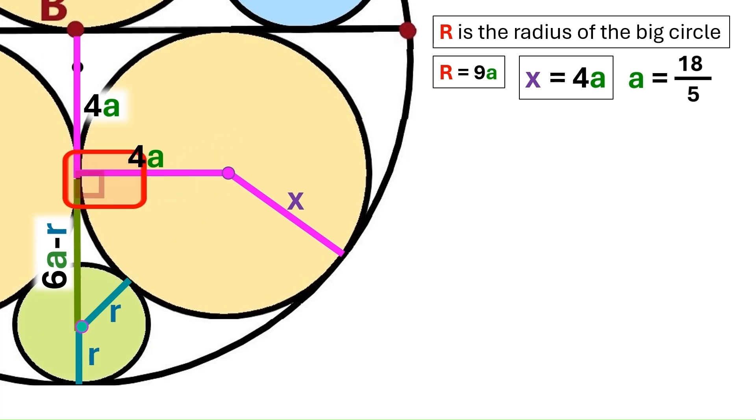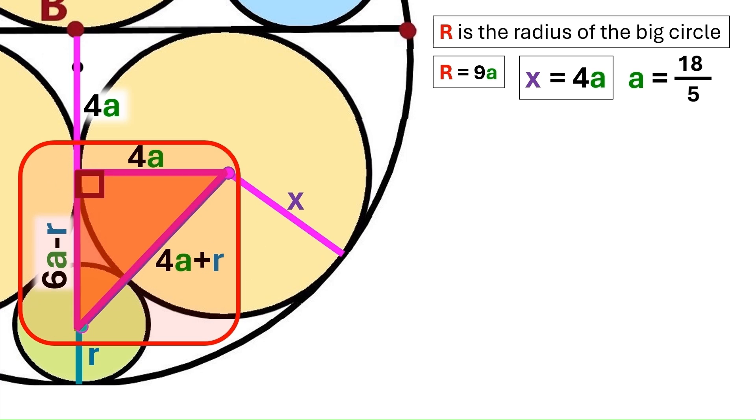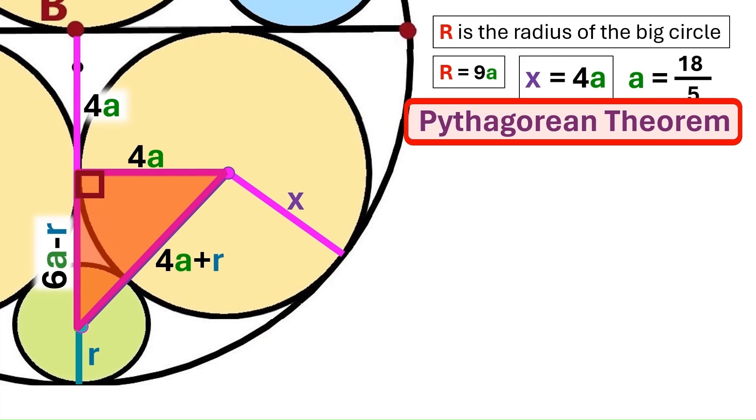And we already know this radius equals 4a. And we've got a right angle here because it's the point of tangency. And let's put another radius here. And it's 4a too. And this whole distance is 4a plus r. We've got yet another right triangle. And yes, you guessed right. Pythagorean theorem.